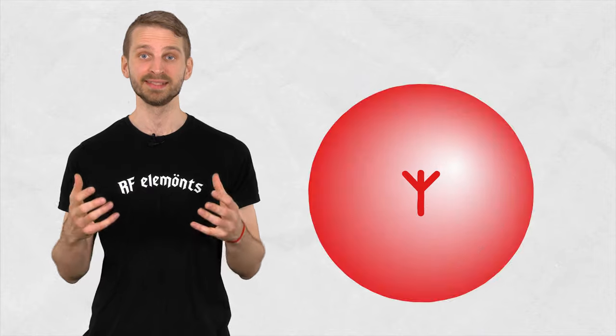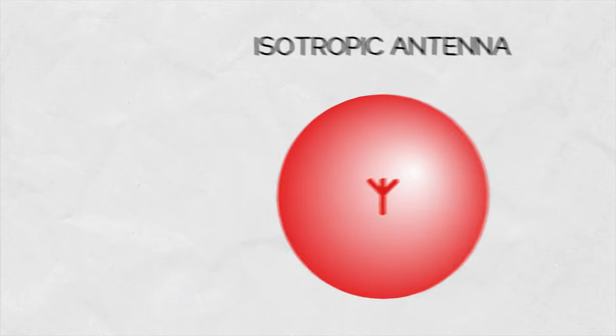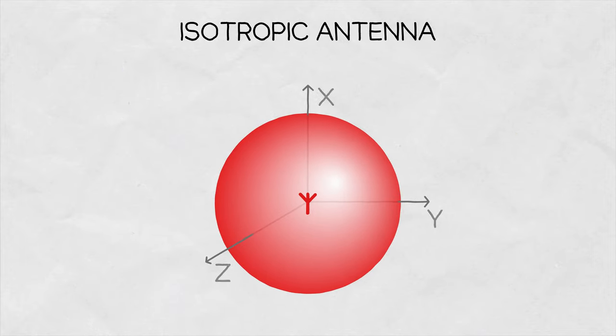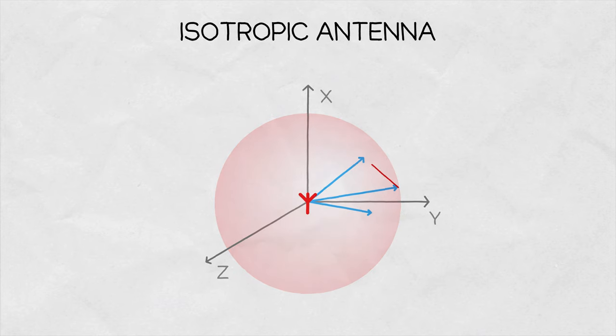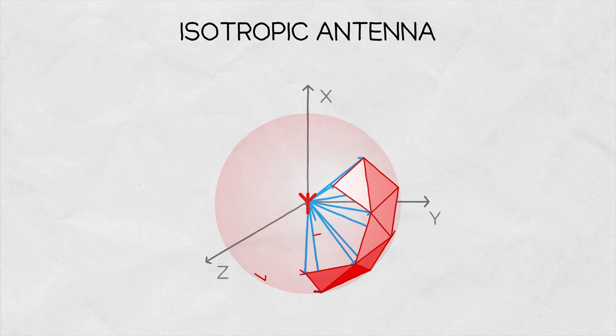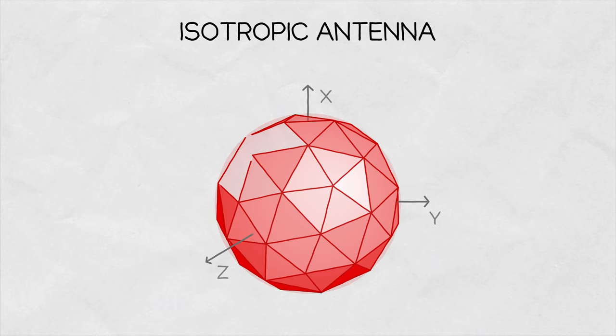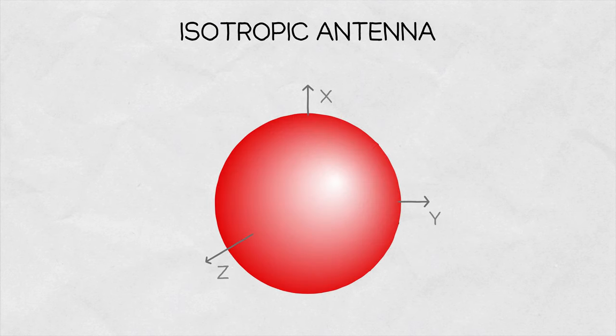Imagine the simplest example of an isotropic antenna. It is a theoretical antenna that radiates with the same intensity in every direction. Let's place it at the origin of the XYZ coordinate system. Drawing radiation intensity in a given direction as vectors and connecting their tips, we get a surface which is the 3D radiation diagram. Since an isotropic antenna radiates with the same strength in all directions, the radiation pattern has the shape of a sphere. It's that simple.